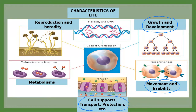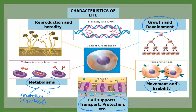The fourth characteristic of life is metabolism — all chemical reactions present in the cell or body. There are two types: anabolism, which is a synthesis reaction that builds bigger molecules from smaller ones; and catabolism, which breaks bigger molecules into smaller molecules, also known as decomposition. All living things have the ability to perform metabolism.